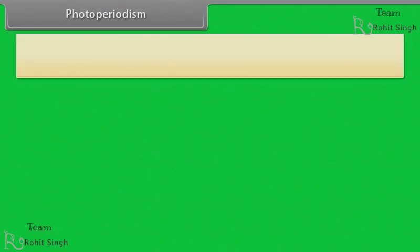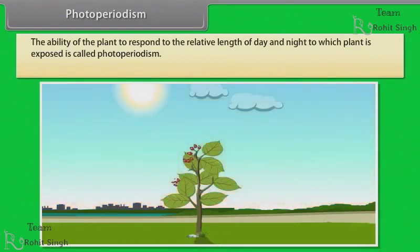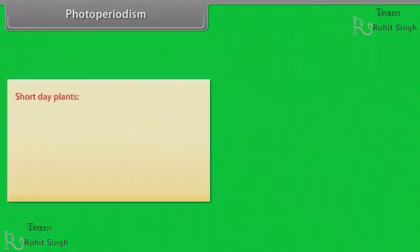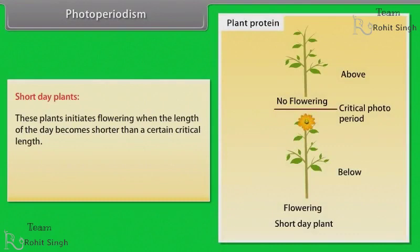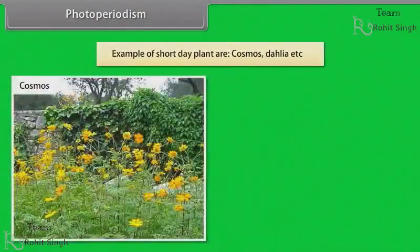The ability of plants to respond to the relative length of day and night to which the plant is exposed is called photoperiodism. The flowering response of the angiosperms falls into three categories. Short day plants: these plants initiate flowering when the length of the day becomes shorter than a certain critical length; if exposed to a length greater than the critical length, they will remain vegetative. Examples of short day plants are Cosmos, dahlia, etc.